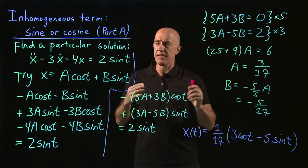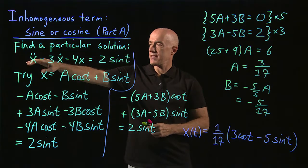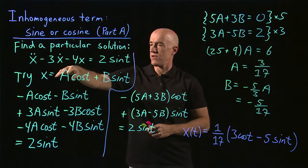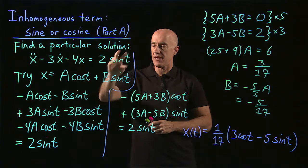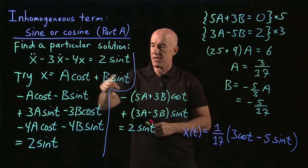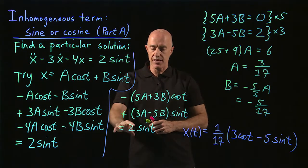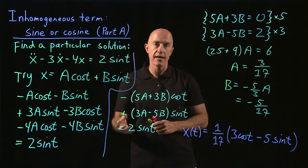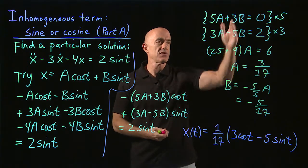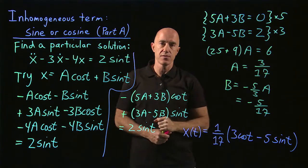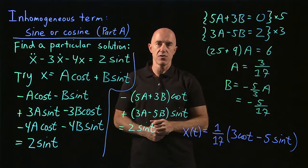Let's review how to find a particular solution when the right-hand side is a sine or cosine function. Because it's a second-order equation containing a second derivative, first derivative, and the function, we can't just match sine with sine — we have to try an ansatz that contains both a cosine term and a sine term, always matching the argument of sine. Then you substitute in, do the algebra, collect terms, and set the coefficient of cosine on the left equal to that on the right, and similarly for sine. That gives two equations and two unknowns to solve. In the next video I'll show you another technique, which is actually the technique I prefer.